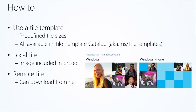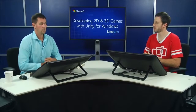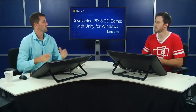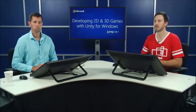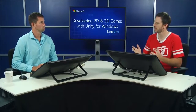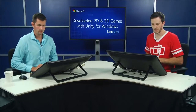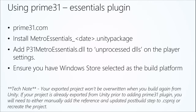Maybe if you want to send updates or seasonal information, you don't have to rebuild and republish your entire app — you can just point to an image out on the net. Prime 31, when you download it — and we're going to be using Prime 31 here today — they actually have an example of pulling a remote tile down from the net. So you could write a service around that, maybe a website or an Azure mobile service, and use server-side services to bring back data. We're going to be using the Microsoft Essentials plugin from Prime 31 — go to prime31.com and install the package into your project.